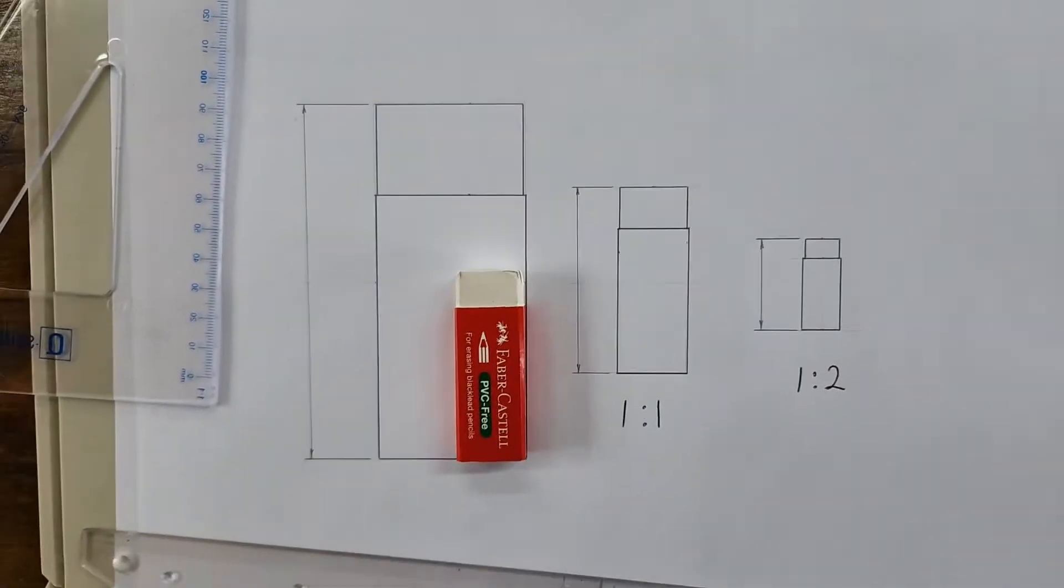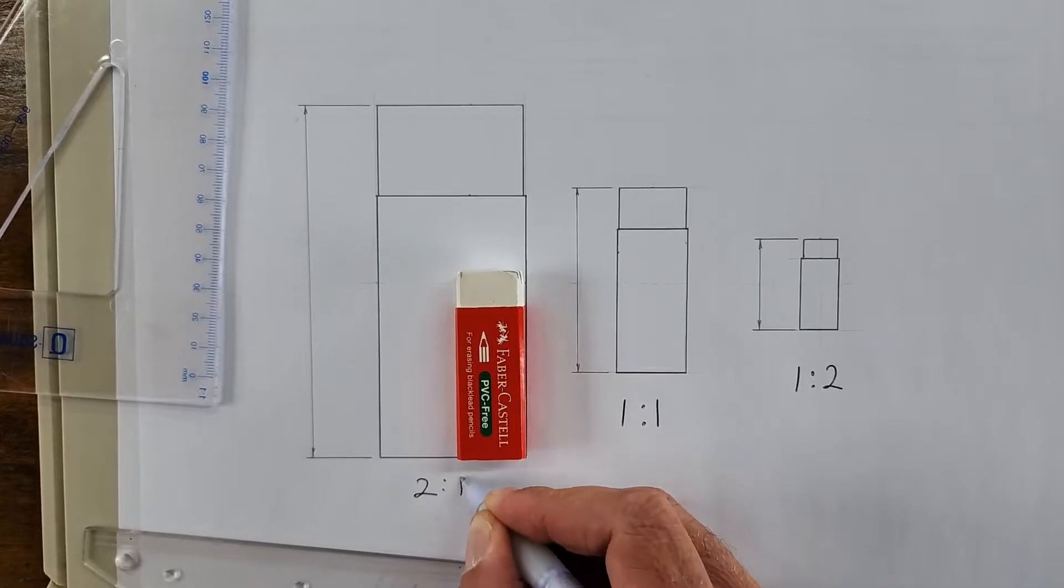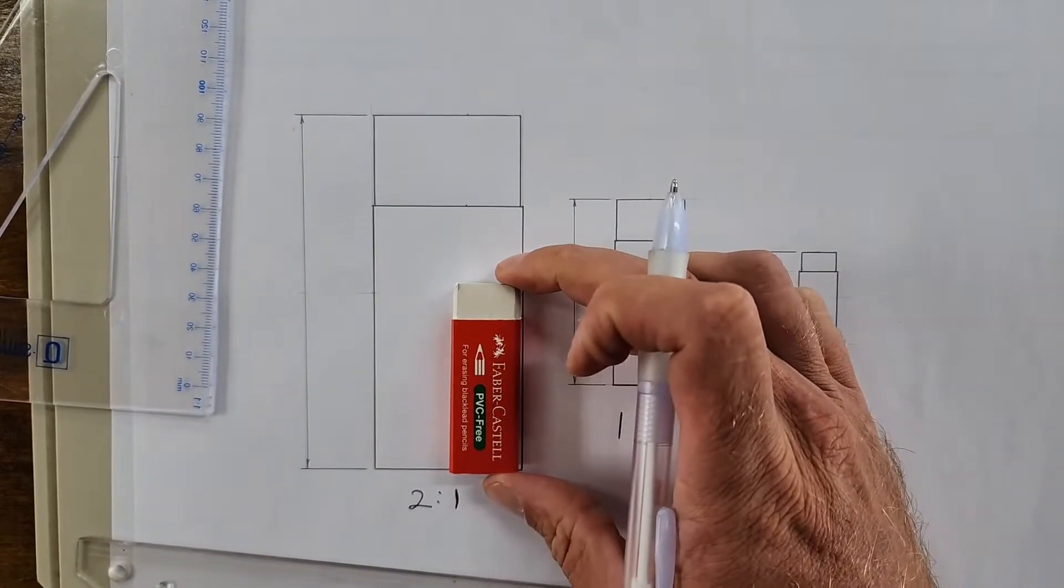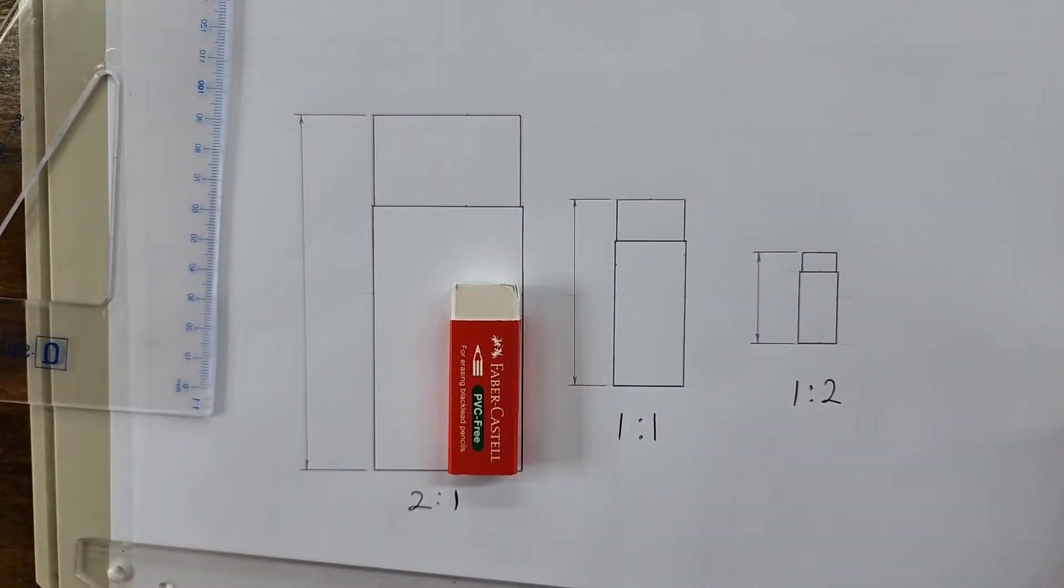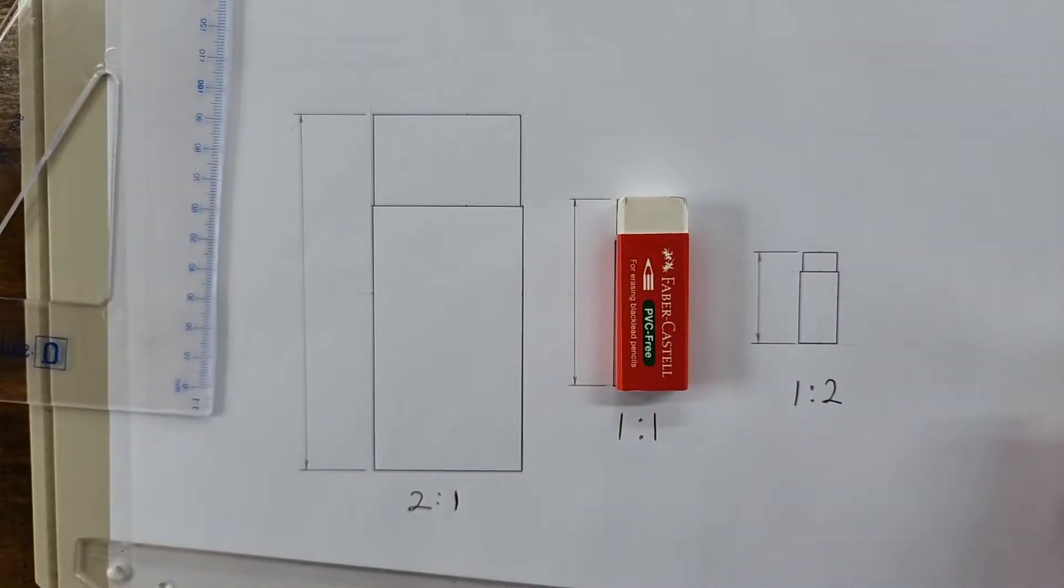On the opposite side I've drawn it now scale 2 to 1. In other words, it is now double the size it was originally. Do you see that?